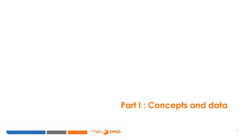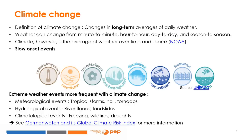Let's start with concepts and data. According to the National Oceanic and Atmospheric Administration, NOAA, climate is defined as the long-term average of weather over a period of several decades. So when we talk about climate change, we are talking about changes in the long-term averages of daily weather. For example, with temperature, the observed increase in average temperatures by about 2 degrees since the pre-industrial era of 1900 is considered as a change in climate.